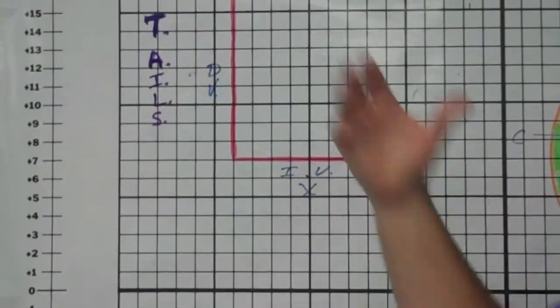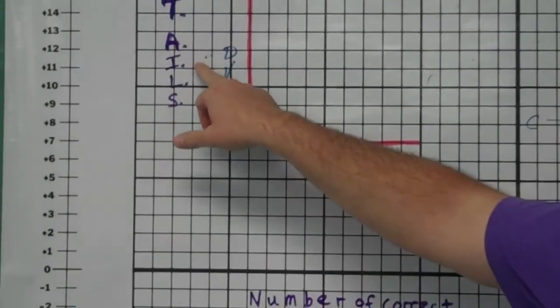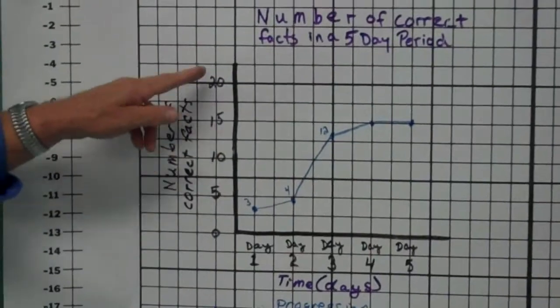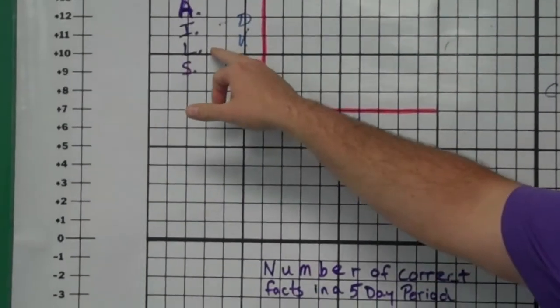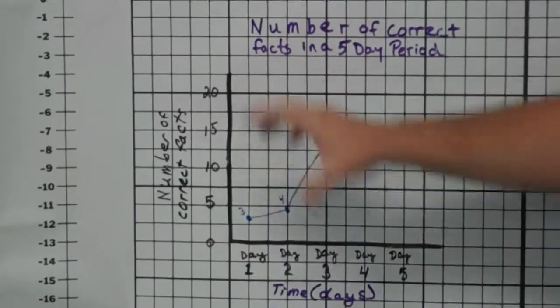A, the axes. Are the axes labeled? The I, the intervals, that spacing. Is it done correctly? The L is part of that labeling as well. Here, between the axes, the zero, five, ten, all the numbers.